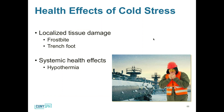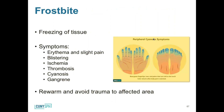The main cold stress health effects include localized tissue damage — frostbite and trench foot — and systemic effects in the form of hypothermia. Frostbite is the freezing of tissue due to extreme cold or contact with cold objects. Symptoms range from erythema and slight pain, progressing to blistering, ischemia, thrombosis, cyanosis of the peripherals turning blue, and ultimately gangrene with necrotic tissue.